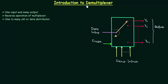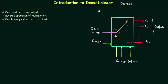Welcome to this presentation. From this lecture we will start demultiplexer, demultiplexer in short called as demux. Demux is a combinational circuit having one input and many outputs. Depending upon the select inputs, this single input is transferred to any of these outputs. So we can clearly see demultiplexer is having the reverse operation as compared to multiplexer.